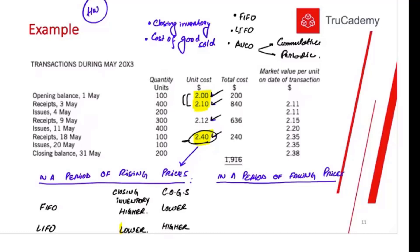With AVCO, whatever method you use, it will always give you an average. The closing inventory value will always be in between the FIFO and LIFO closing inventory, and the same goes for the cost of goods sold. Exactly the opposite will happen in a period of falling prices — completely vice versa.